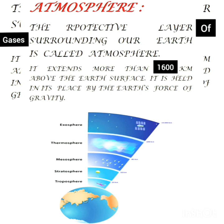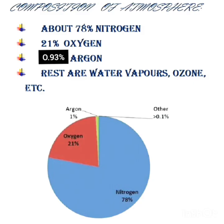The atmosphere is made up of different gases, water vapor, and dust particles. The Earth's atmosphere is composed of about 78 percent nitrogen, 21 percent oxygen, and 0.93 percent argon. The rest of the gases, which are less than 0.1 percent, contain traces of gases including water vapor, carbon dioxide, and ozone.